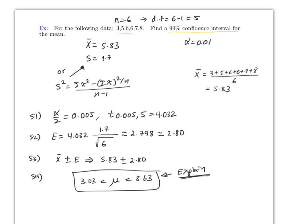Finding confidence intervals is very simple once you find the critical values. You can use the calculator to check, but you should work through all the steps at least once or twice — it will be very useful in later chapters. That's it for section 7.2.